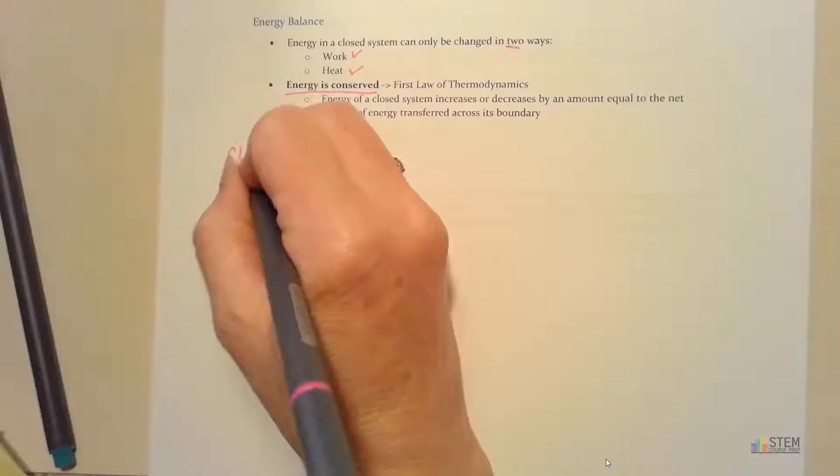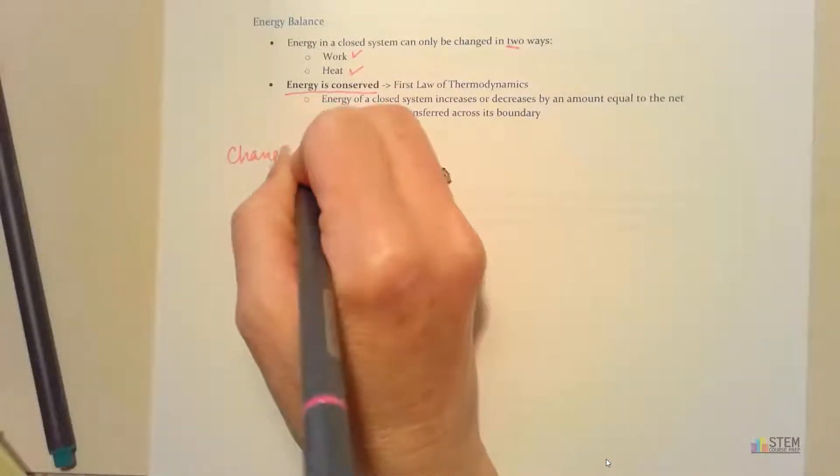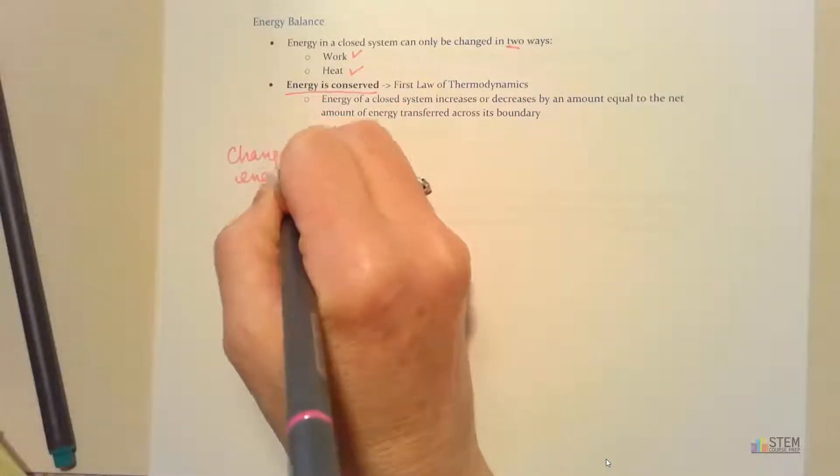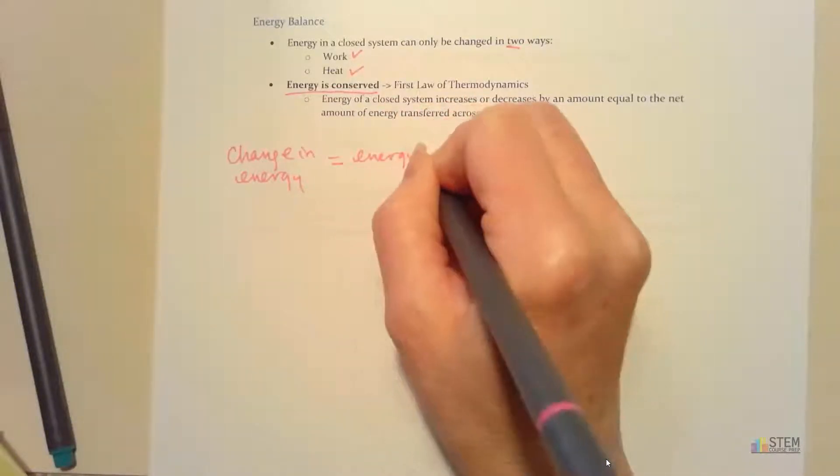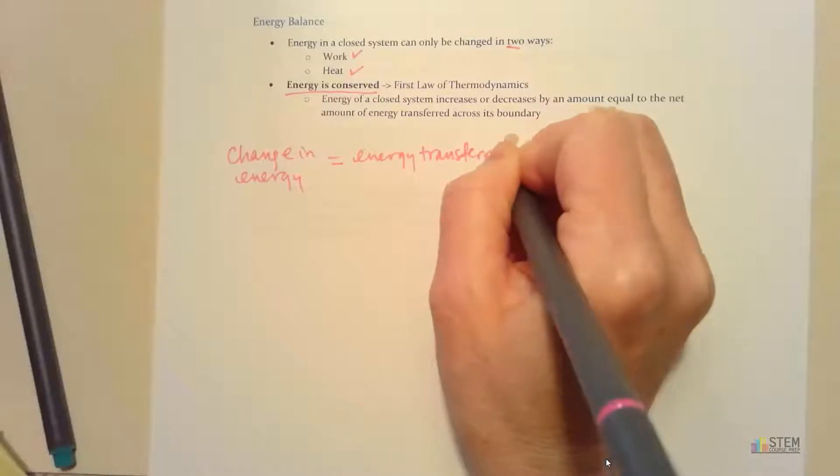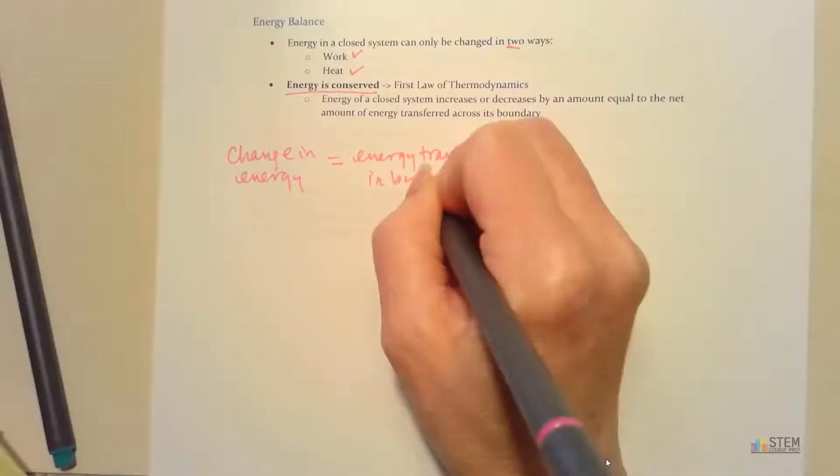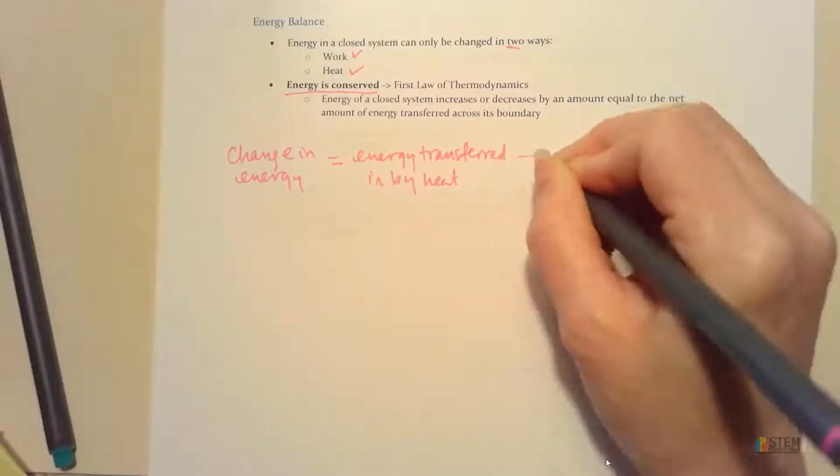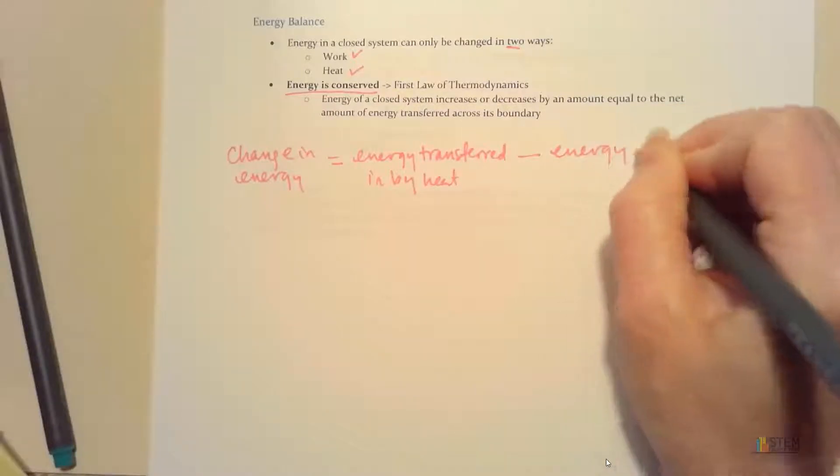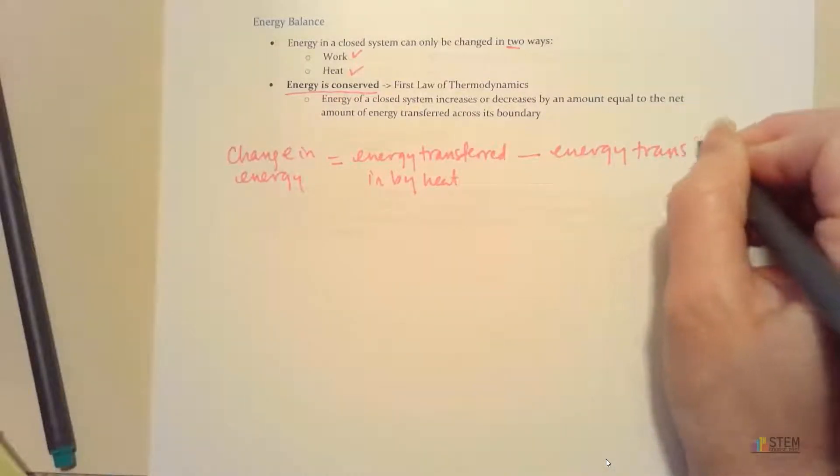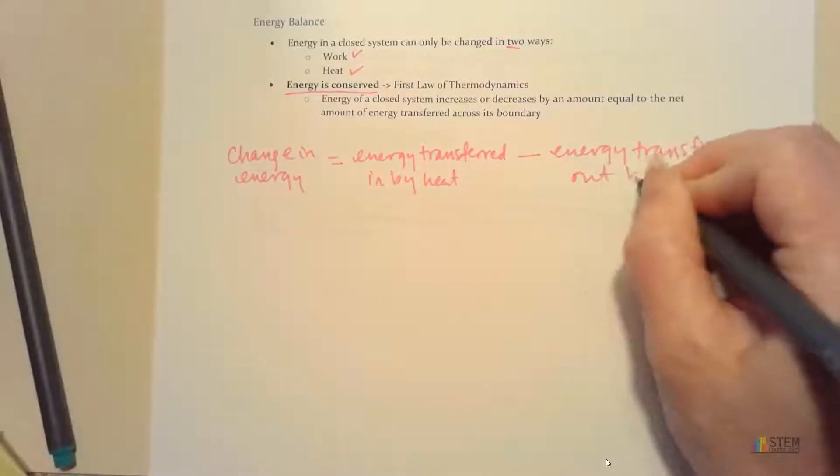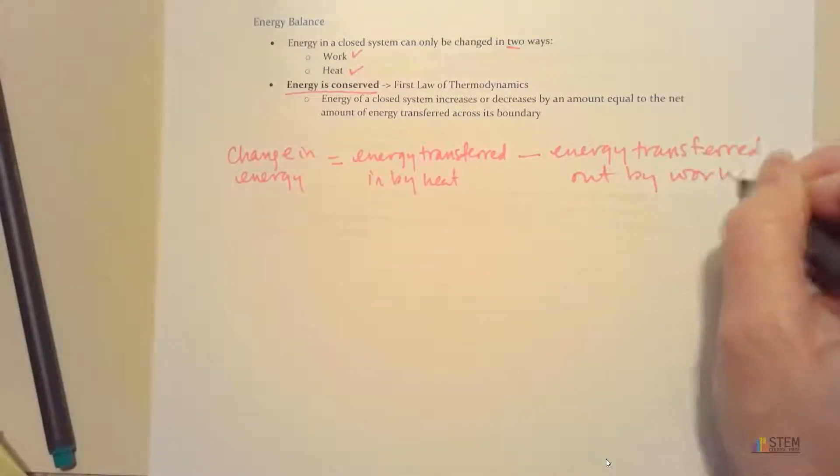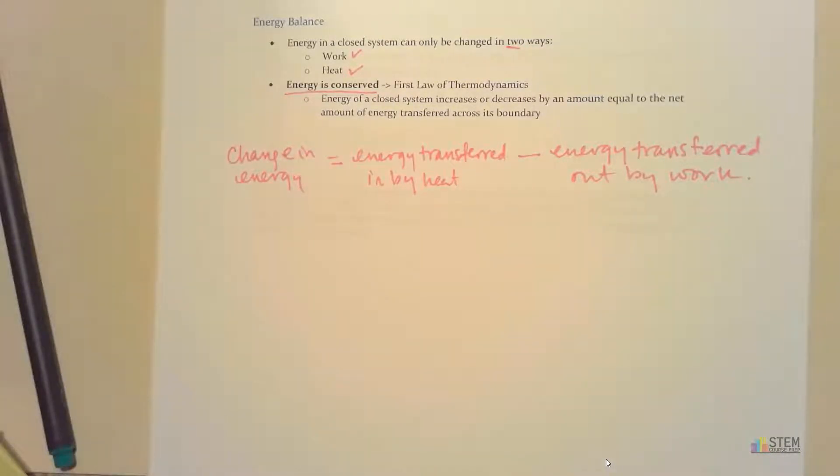So that's basically saying that the change in energy is going to equal the energy transferred in by heat, and then we're going to subtract the energy transferred out by work. So that's essentially our first law of thermodynamics right there.